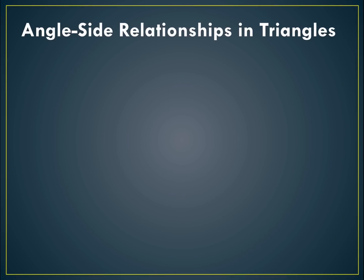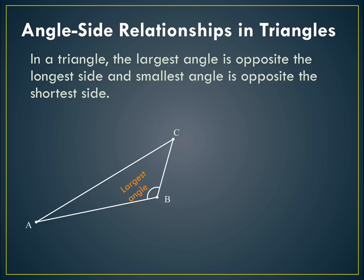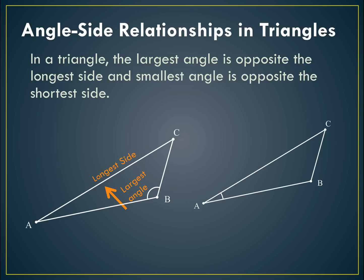Now, what about angle-side relationships in triangles? If we have a triangle, the largest angle is opposite the longest side and the smallest angle is opposite the shortest side. Take a look at triangle ABC here. Angle B is the largest angle. The side opposite it — side AC — is the largest side. Angle A is the smallest angle, and the side opposite it, side CB, is going to be the shortest side.